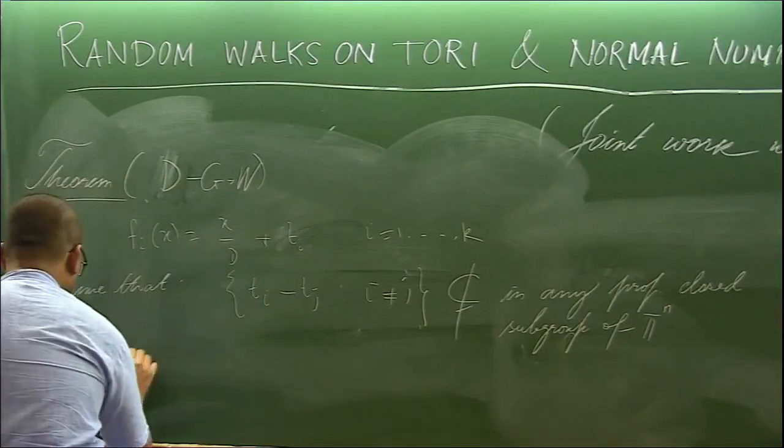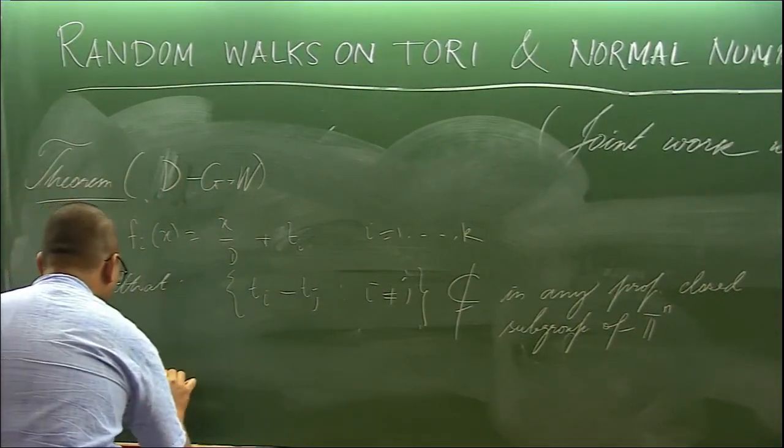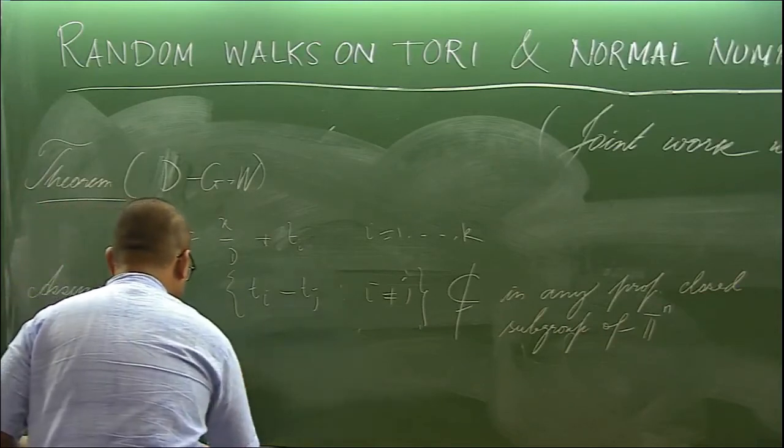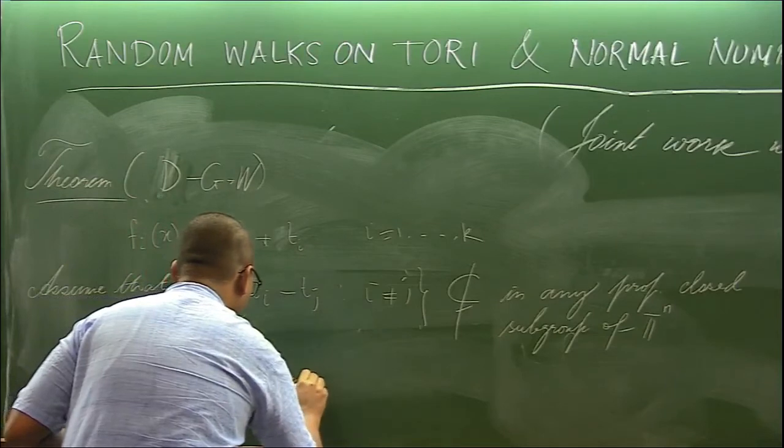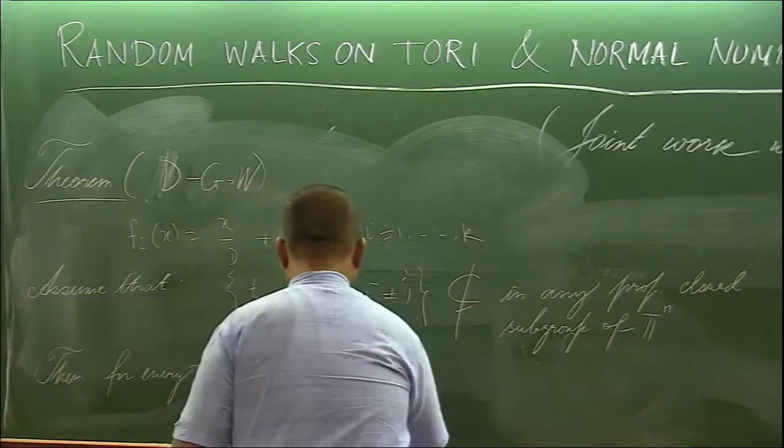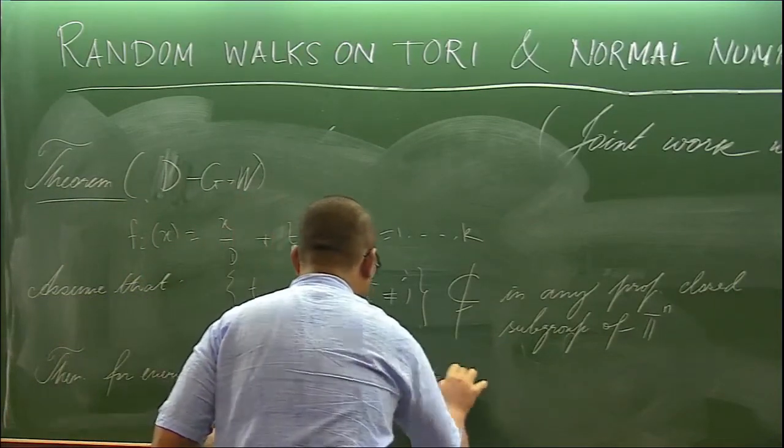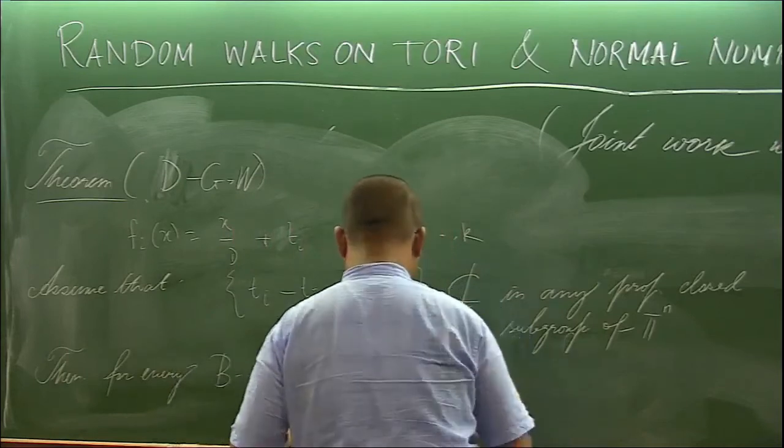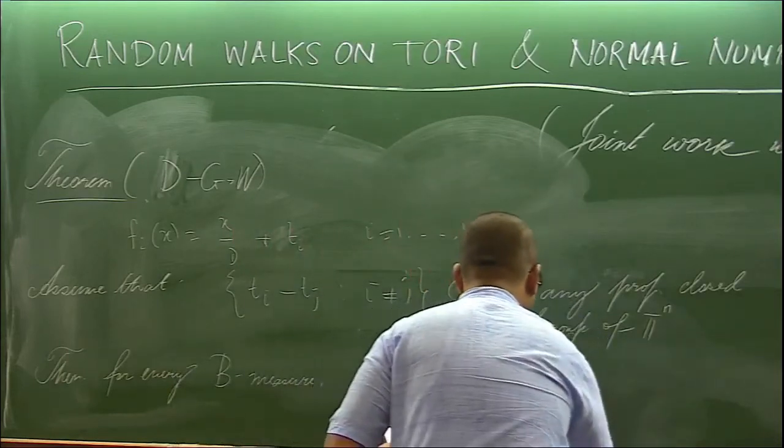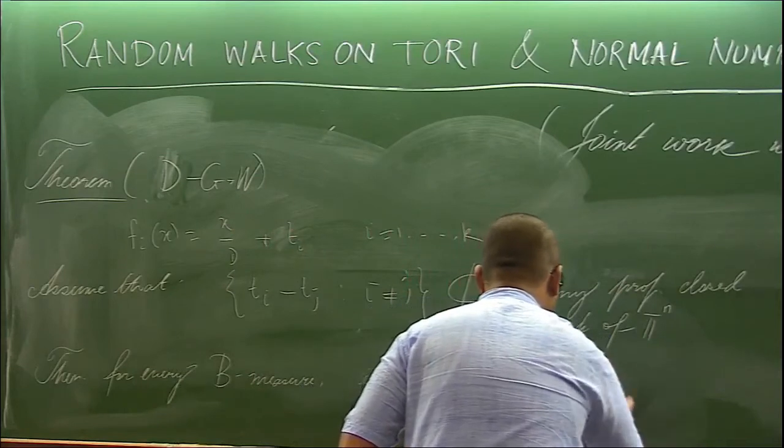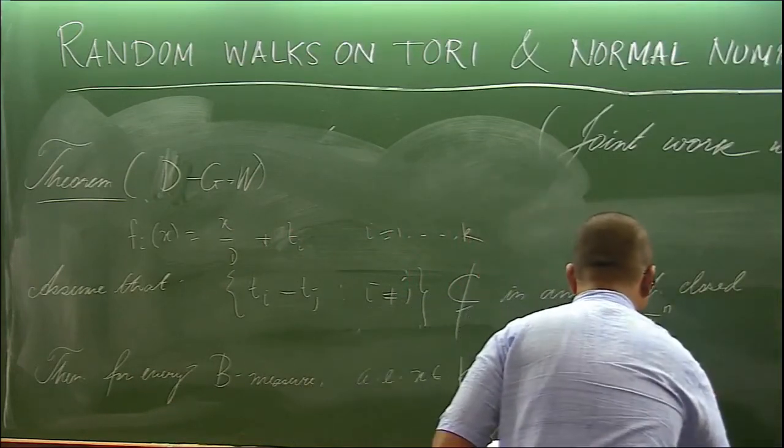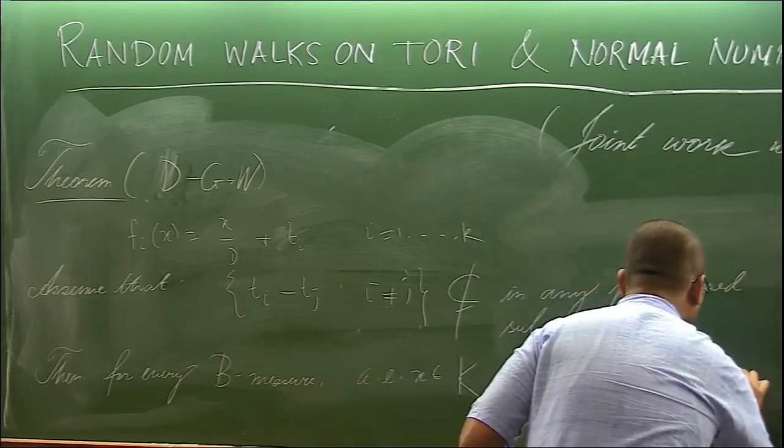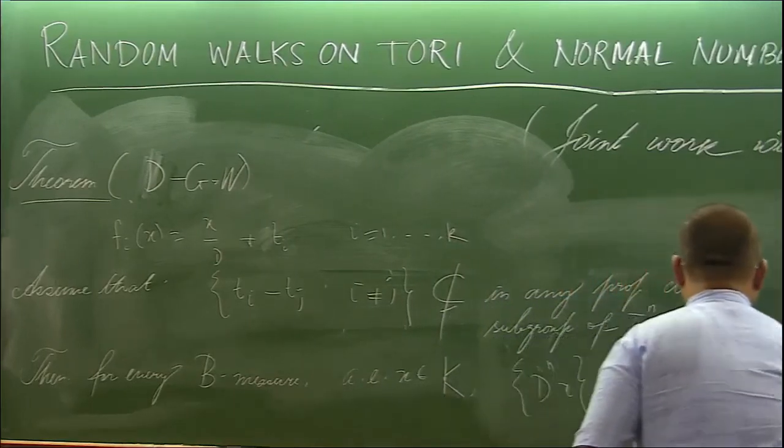Then with respect to any, for every Bernoulli measure, almost every point in the attractor, this sequence d to the n times x equidistributes in the torus with respect to the Haar measure.